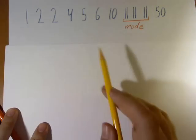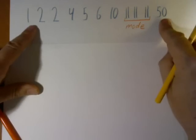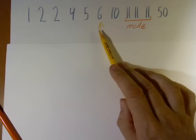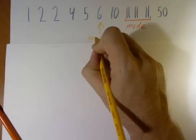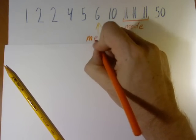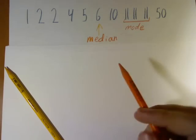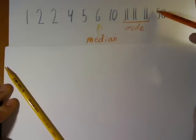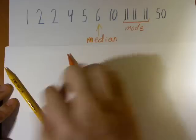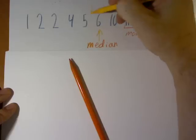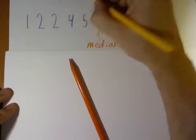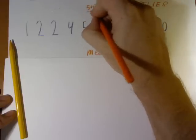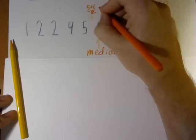If we want to find the median, we need to find the middlemost number. If I take off one from each end, our middle number is 6. So 6 will be our median. When we have an odd number of numbers, the median will be one single number. However, if we have an even number of numbers — say if we got rid of 50 — then the median would fall between 5 and 6. In that case, you take the average of those two: 5 plus 6 divided by 2 gives you 5.5.